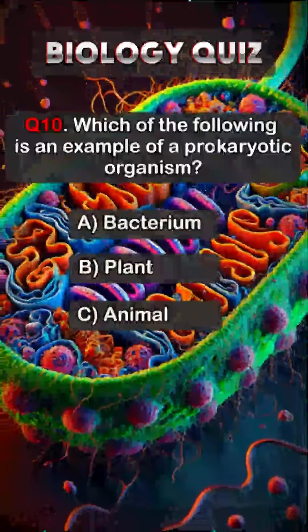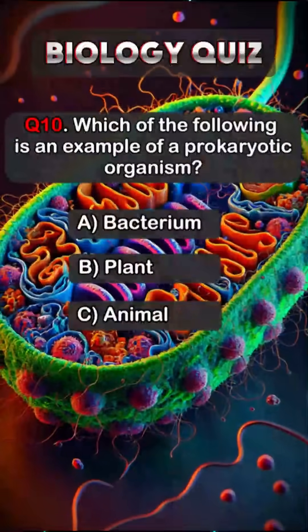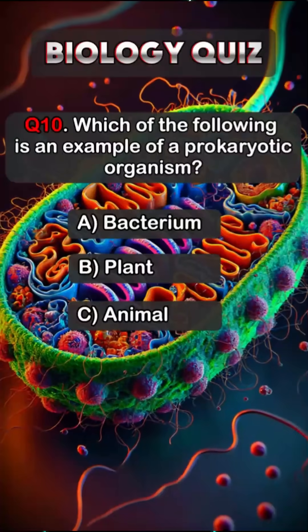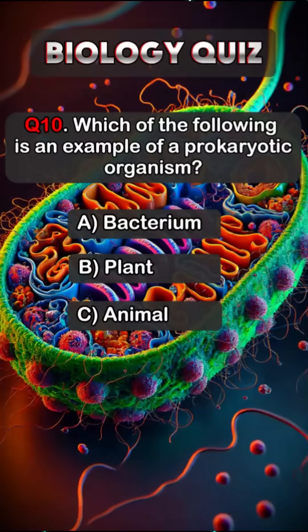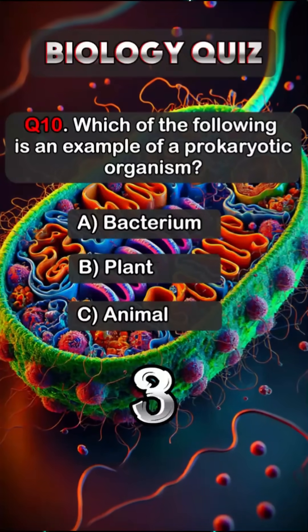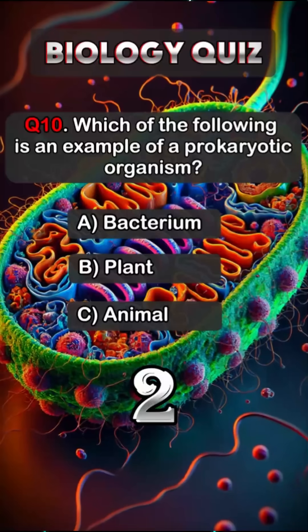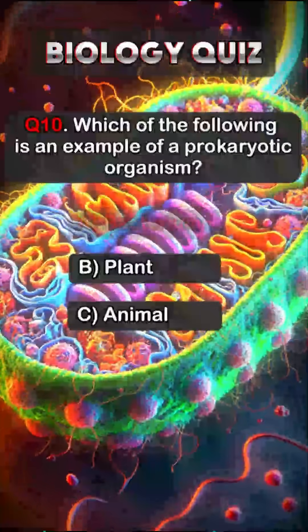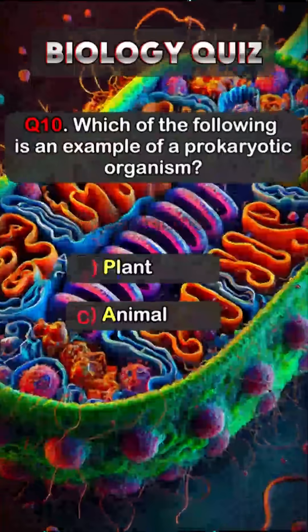Question 10. Which of the following is an example of a prokaryotic organism? Answer A. Bacteria.